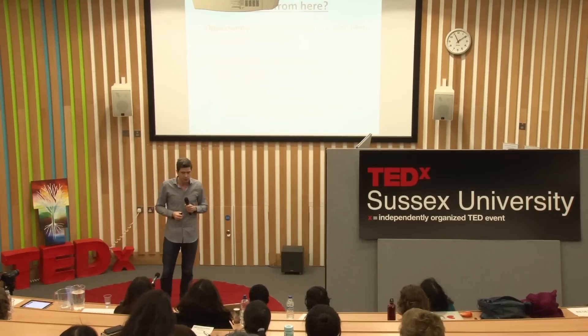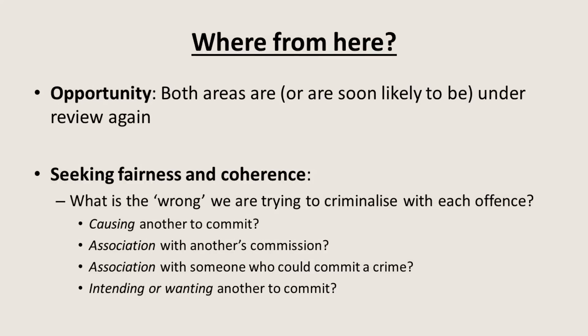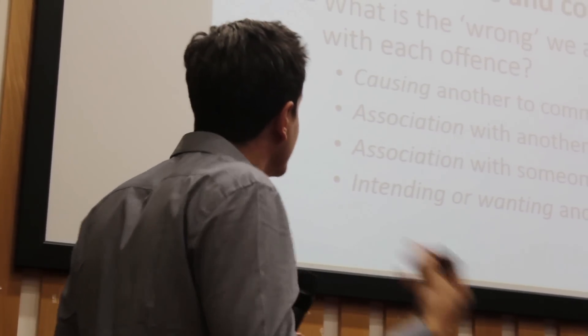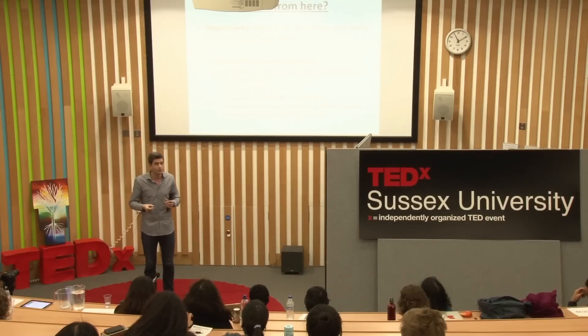So where can we go from here? At the moment, the Justice Committee within the House of Commons is reviewing the inchoate form of liability, and it's very likely that review will lead somewhere. There's also potential for the complicity part to be sent back to the Law Commission again. My major point — particularly true of complicity because it's hard to pin down what we're trying to criminalise — is that if we're going to seek fairness, seek coherence, and avoid over-criminalisation, the only way to do that is to begin by identifying the wrong that a criminal offence is trying to criminalise and have some kind of consensus around that.